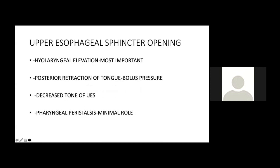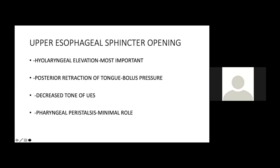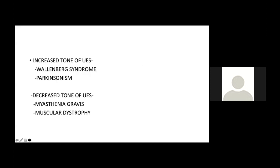The most important component of upper esophageal sphincter opening is higher laryngeal elevation. Second is posterior retraction of the tongue, which creates bolus pressure causing UES opening. The tone of the UES should decrease, and pharyngeal peristalsis has minimal role — mainly for clearing food from the pharynx. Increased UES tone is seen in Wallenberg syndrome and Parkinsonism; decreased UES tone occurs in myasthenia gravis or muscular dystrophy.